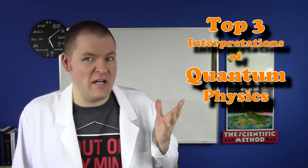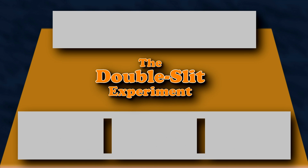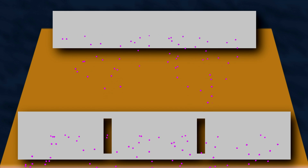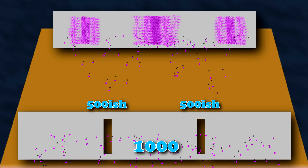Or at least the best three guesses by our brightest minds. The ensemble interpretation: the math doesn't apply to individual particles, only an ensemble or collection of them. In the double slit experiment, each electron has a 50-50 chance of going through either slit. You can't know which it'll go through in advance, but you do know if you send a thousand electrons, about 500 of them will go through each. Some scientists think that's all quantum physics can actually tell us, and we shouldn't pretend to detect what's really happening.